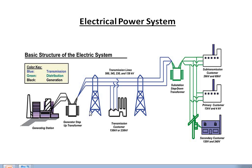It is economical to establish a power plant near natural sources of energy like coal, gas, and water. Hence we have to construct electrical generating stations often far away from the load centers. So we have to build an electrical network system to bring power from the generating station to the consumer end. This electrical energy reaches the consumer through the system which we call transmission and distribution.